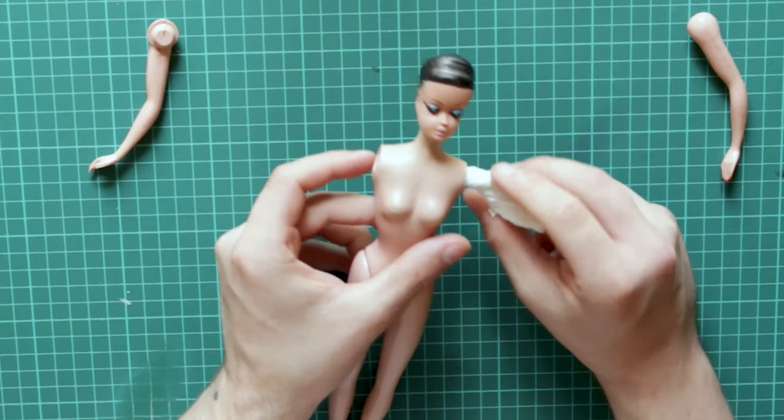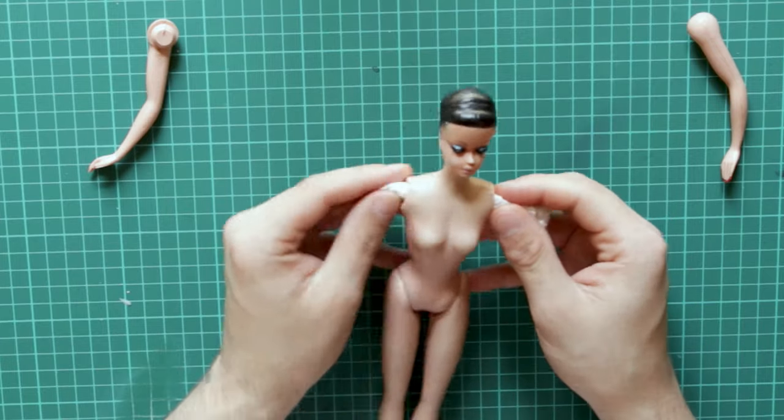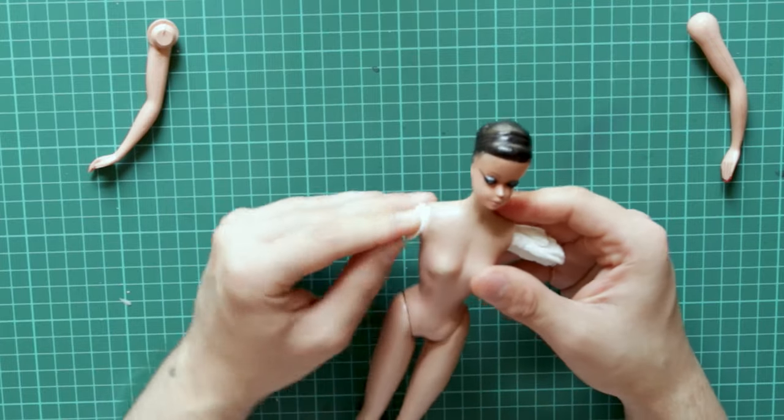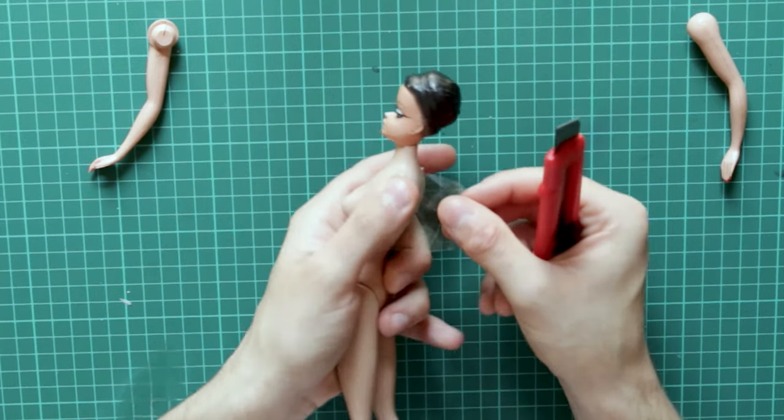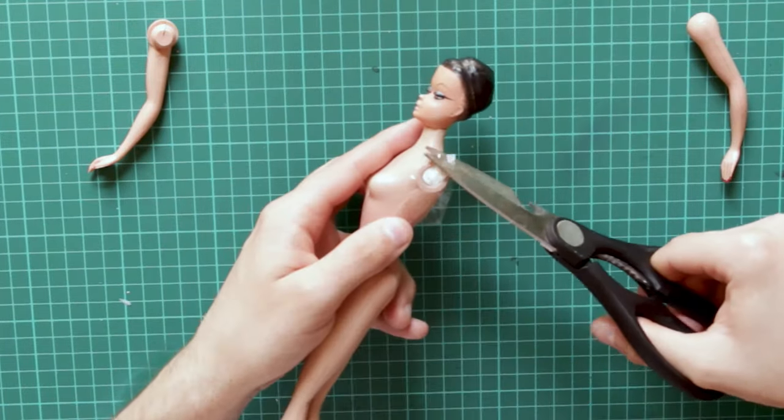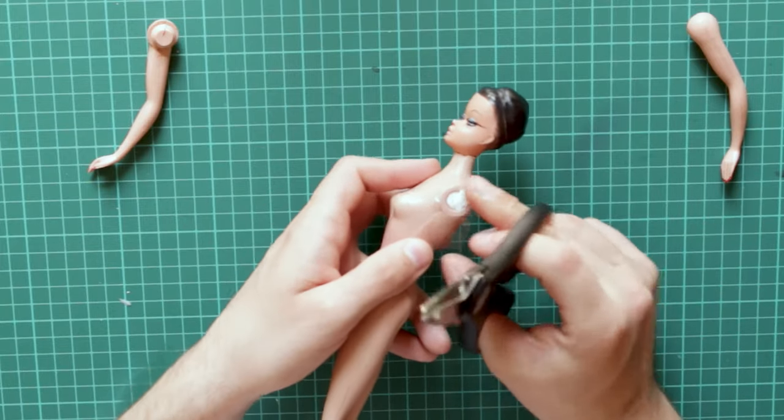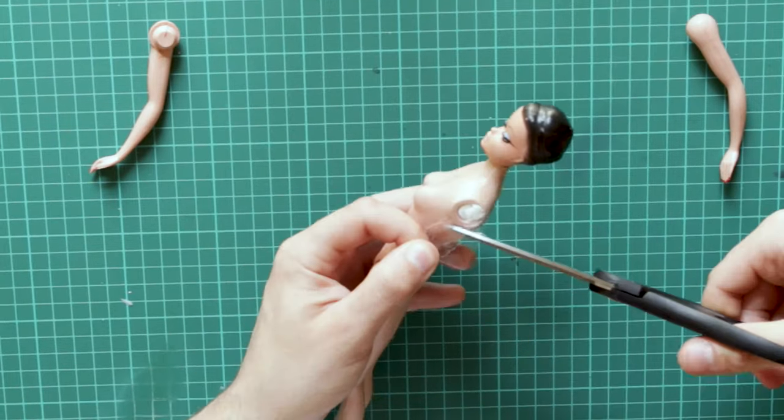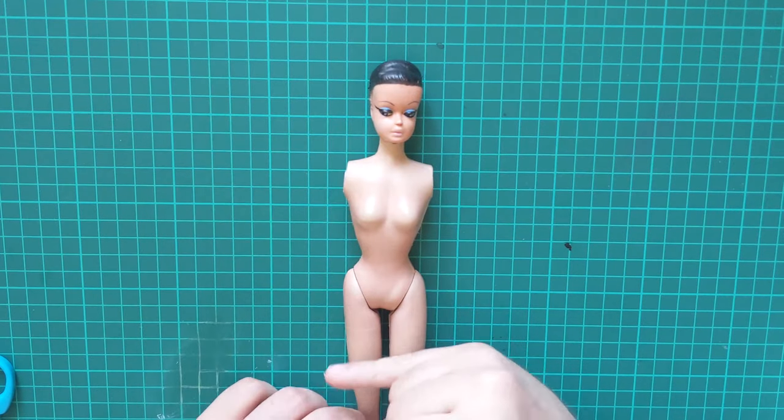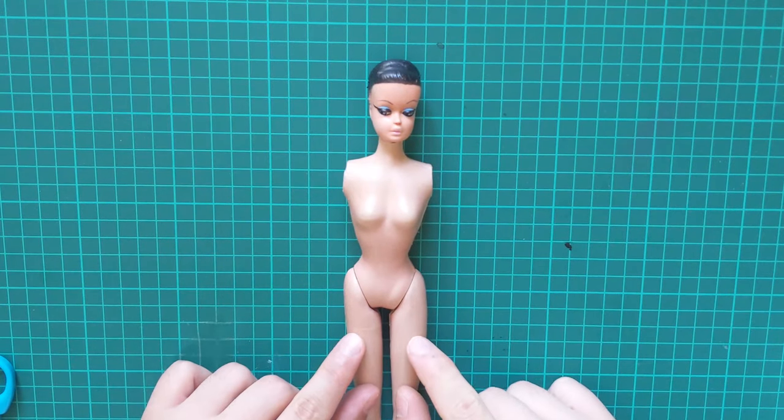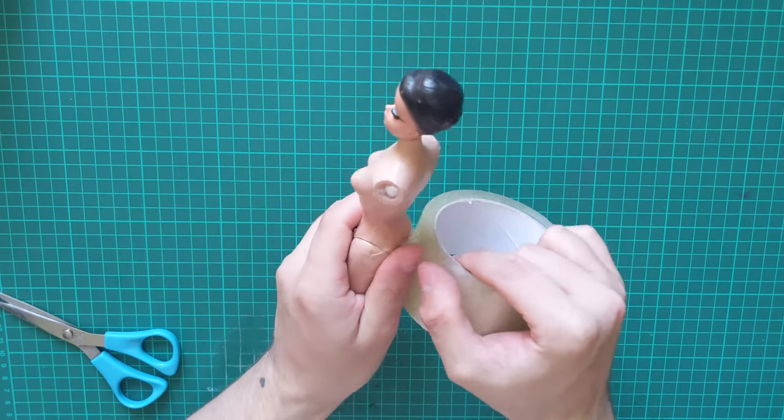Then I stuff the armholes with tissues as to not make the holes cave in. Then I cover them with tape. Anywhere there are holes or gaps, it becomes a problem for mold making, so I attach to the legs using tape.